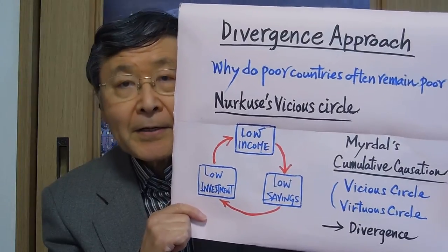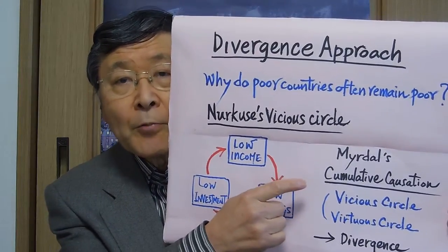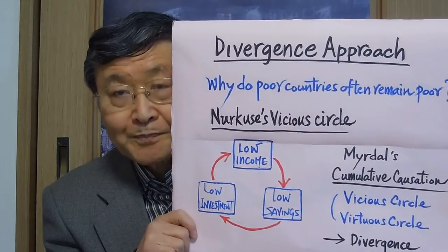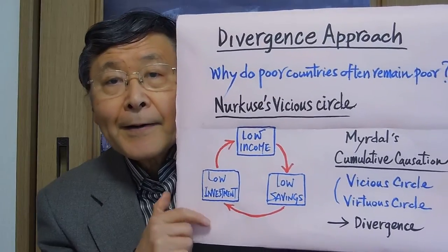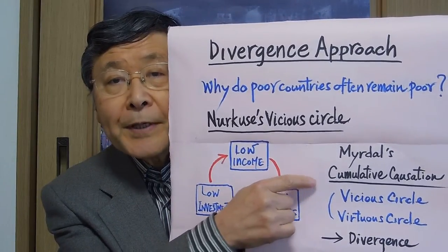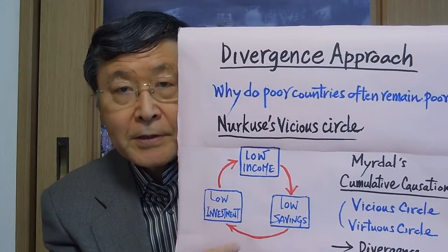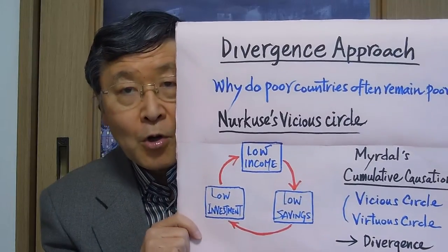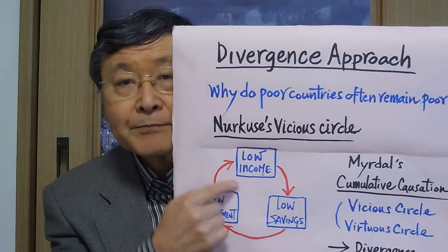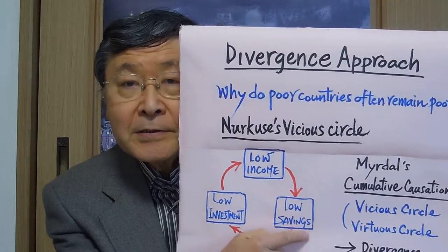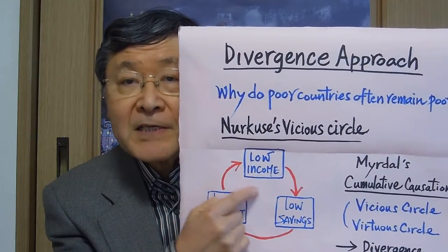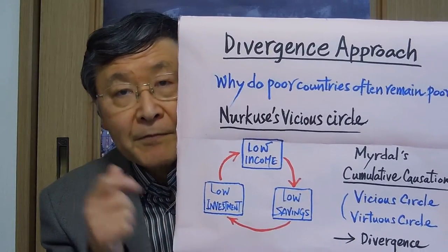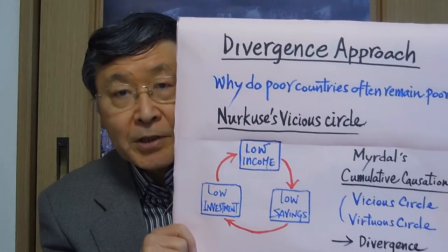This kind of idea was also expressed by Nobel laureate Myrdal, who presented the idea of cumulative causation. Here, poor countries tend to be in the vicious cycle, whereas rich countries tend to be in the virtuous cycle — where high income results in high savings, which produces high investment to increase income further. So there is a movement of divergence between poor and rich countries.